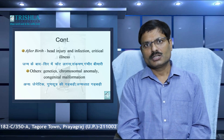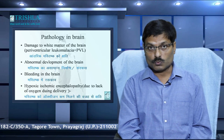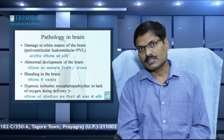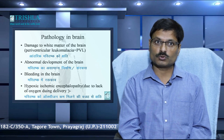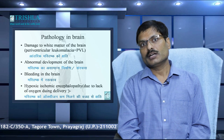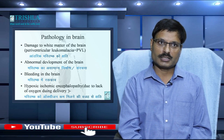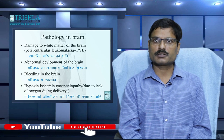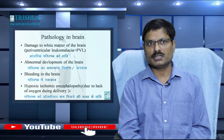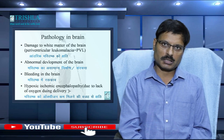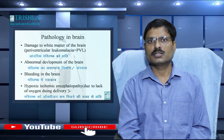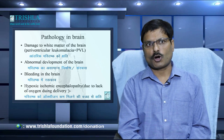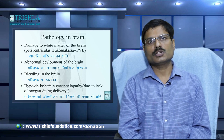Now we should like to know what is the pathology in the brain. On MRI you can see different findings. The first finding is damage to the white matter of the brain — the deepest part near the ventricle — known as periventricular leukomalacia, or PVL. The second is abnormal development of the brain where that brain part is not fully developed as in normal children. The third problem is bleeding or hemorrhage in the brain due to weak vessels. Fourth is hypoxic ischaemic encephalopathy due to lack of oxygen during delivery.